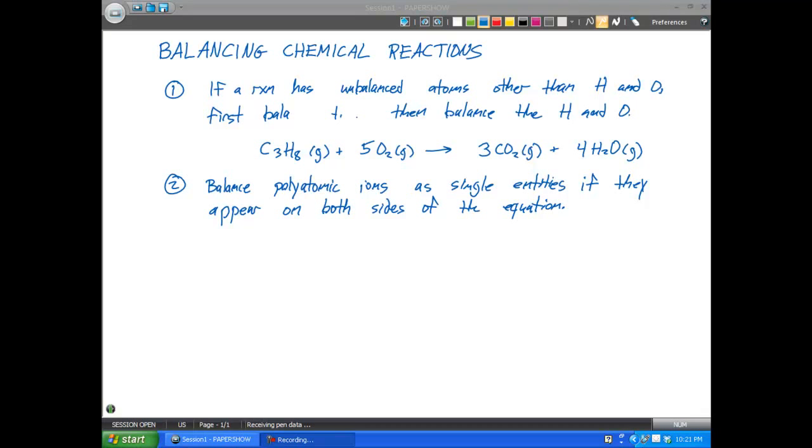So if we have PO4, we want to make sure that you consider that a single entity because the phosphorus and the oxygen are not coming apart. They're gonna stay together as that ion. So for example, if we have CaCl2 plus H3PO4 giving Ca3(PO4)2 plus HCl.